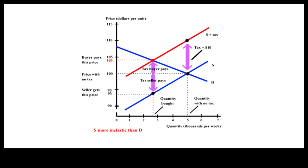Here, supply is more inelastic than demand. This angle measures the slope of the supply curve, and this angle measures the slope of the demand curve. The slope angle of the supply curve is larger than the slope angle of the demand curve, meaning supply is more inelastic than demand. When supply is more inelastic than demand, sellers pay a larger share of the per-unit sales tax.